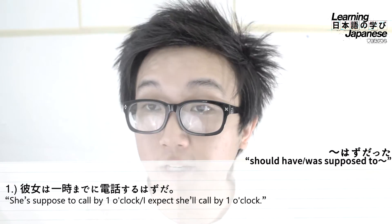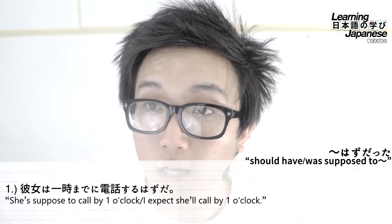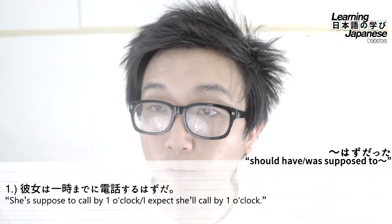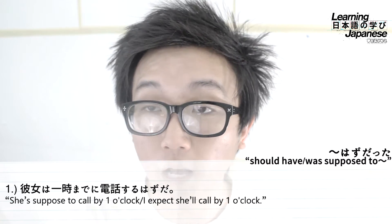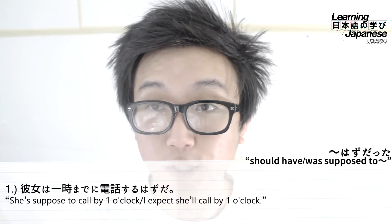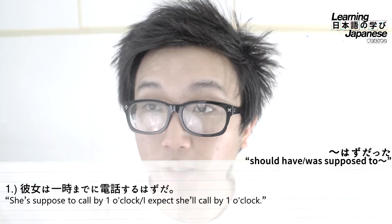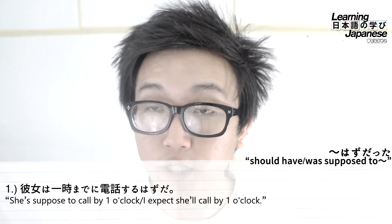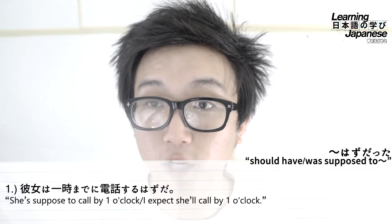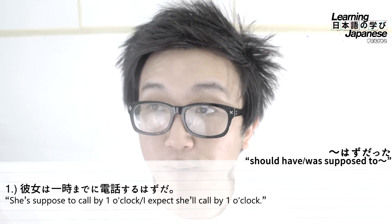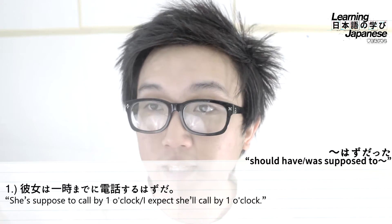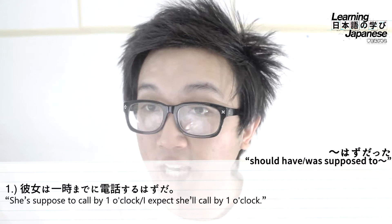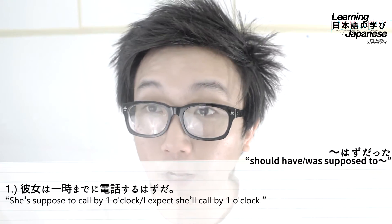Case 1 — present tense for both: 彼女は一時までに電話するはずだ. Breaking it down: 彼女 marked by は as topic; 一時 means 'one o'clock'; までに means 'by,' so 'by one o'clock'; 電話する is a verbal noun meaning 'to phone/call.' We plug in はずだ, so everything is in present tense. This translates to 'she's supposed to call by one o'clock' or 'I expect she'll call by one o'clock.' Not enough time has passed to know if it came true, so no feeling of regret or dissatisfaction just yet.